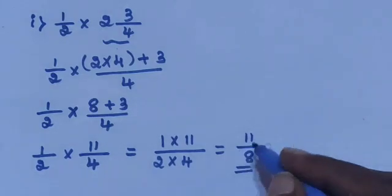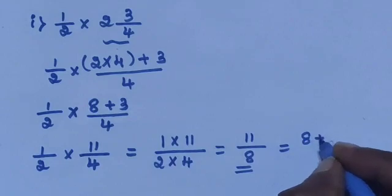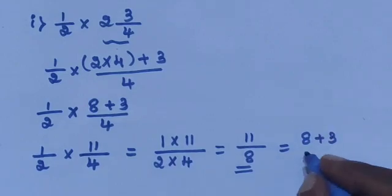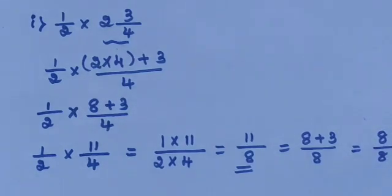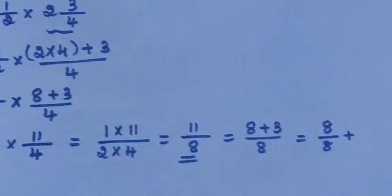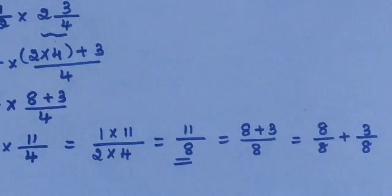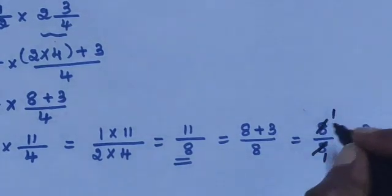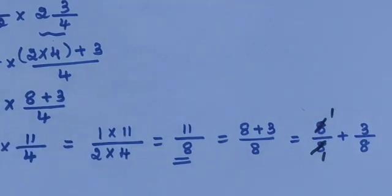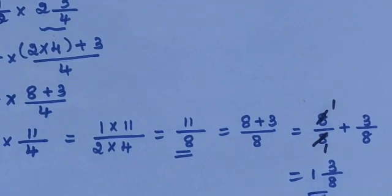Convert 11/8 into a mixed fraction: 11 = 8 + 3, so 8/8 + 3/8 = 1 + 3/8. The final answer is 1³/₈.